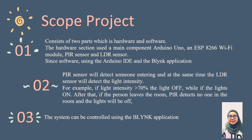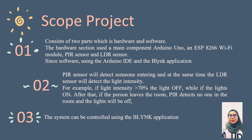The PIR sensor will detect someone entering, and at the same time the LDR sensor will detect the light intensity. For example, if light intensity is more than 70%, the light will be off; otherwise, the light will be on. If the person leaves the room, the PIR sensor detects no one and the light will be turned off. The system can be controlled using the Blynk application.